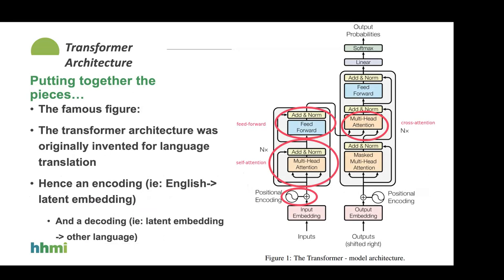Tracking through the full transformer: we start with input words, tokenize them by creating indices into a large table, then index that table to get input embeddings — the N-by-D matrix. We add the positional encoding via straight addition. Note that positional encoding is not trainable — it uses the same fixed sequence of sines and cosines for everyone. Then we feed forward to multi-head attention, which is all of these parallel self-attention operations running simultaneously.